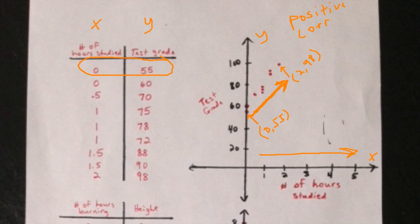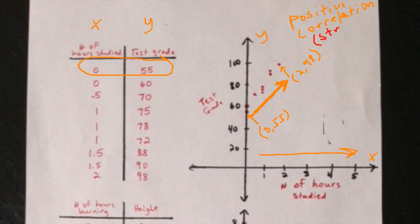A positive correlation, which just means a positive relationship between the two sets of data. And we can actually classify this even further. Because these coordinates are located relatively close together, this would be considered a strong correlation — so it's a strong positive correlation.